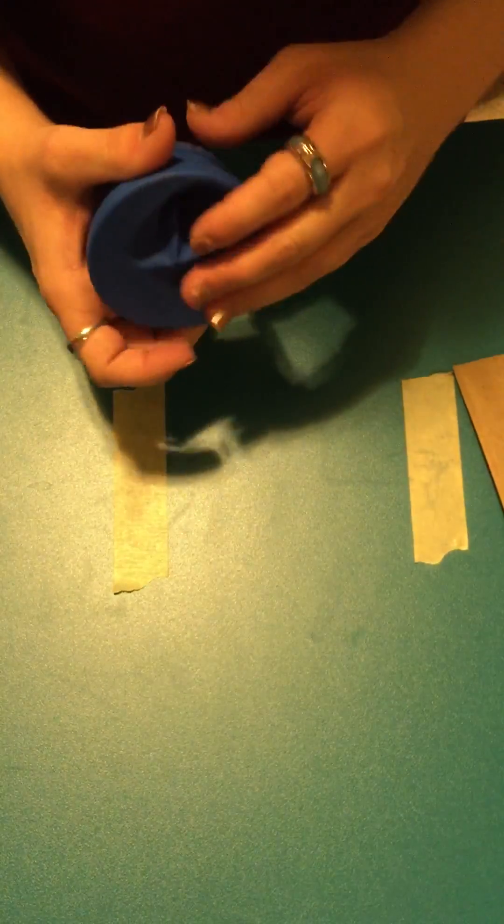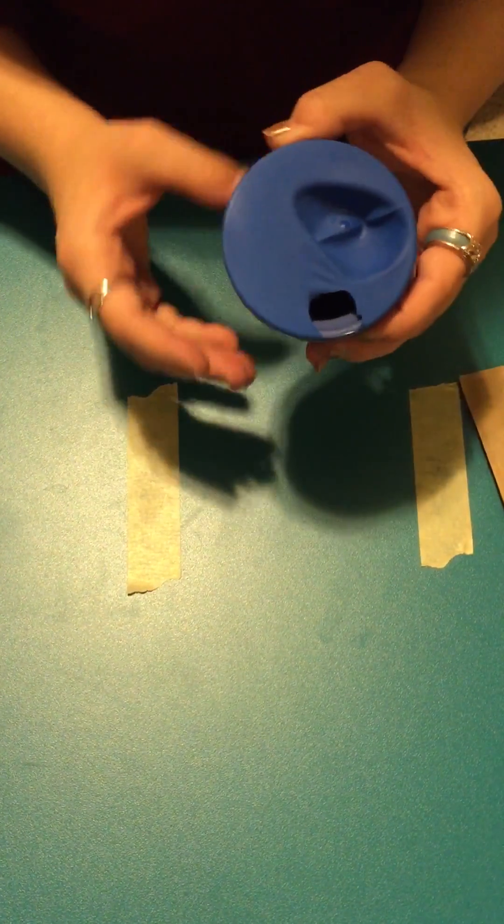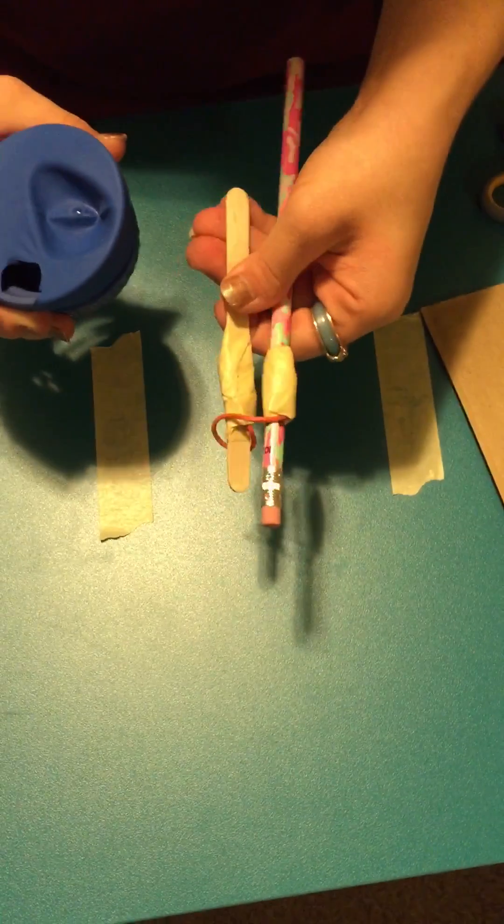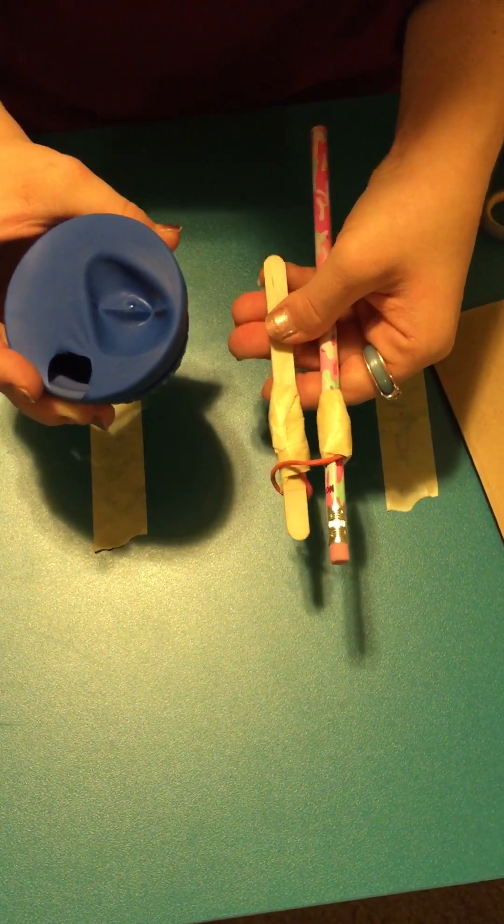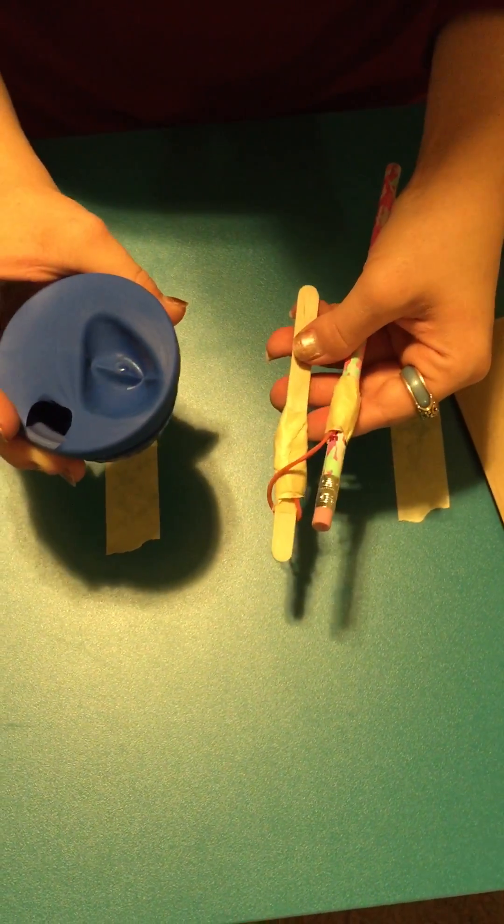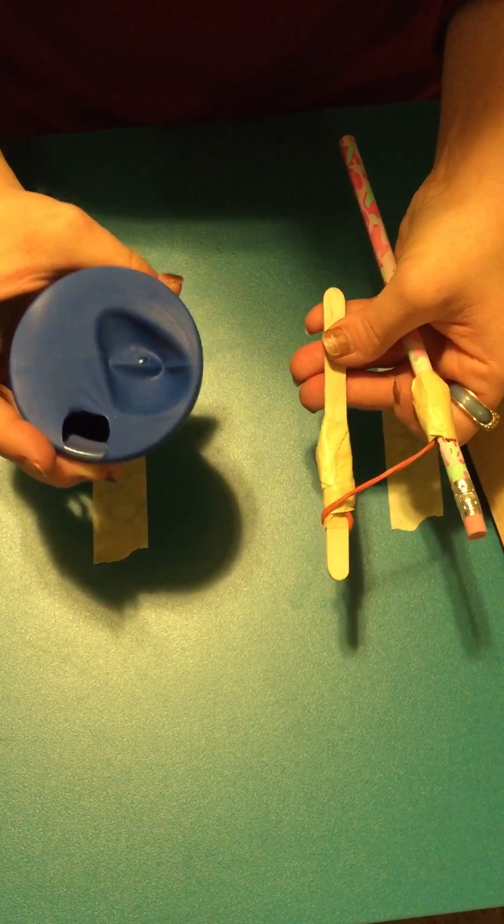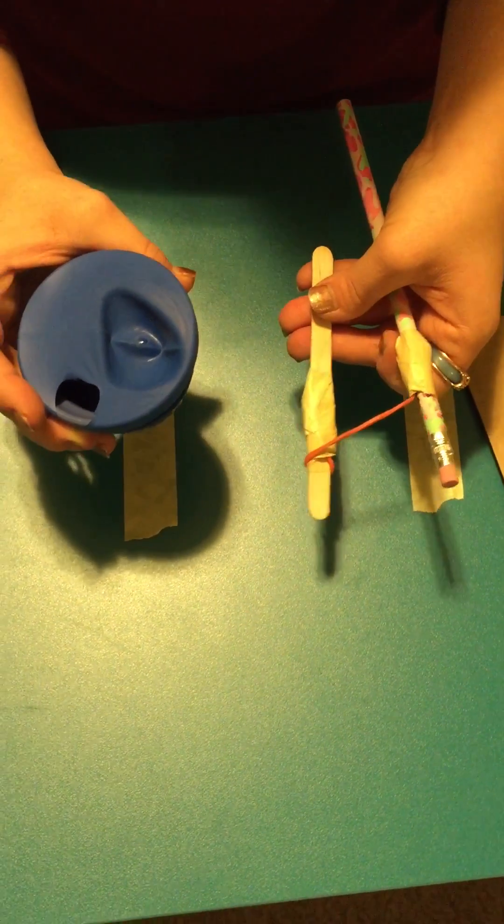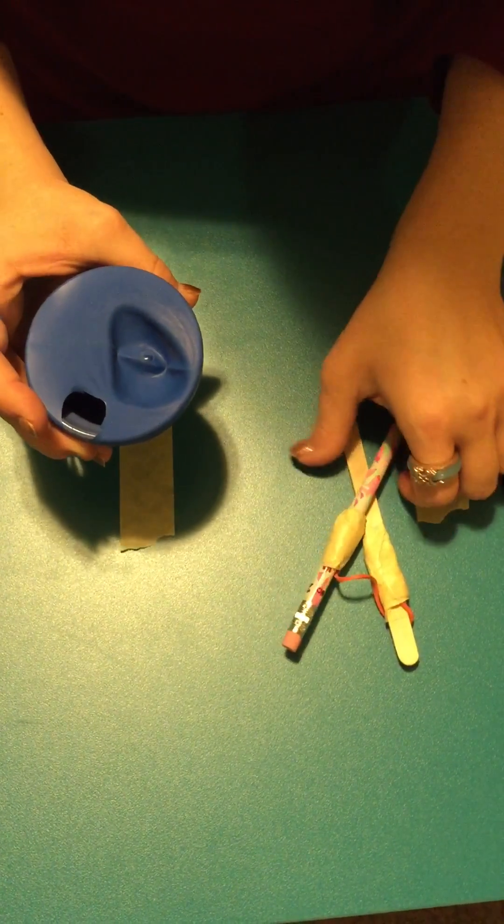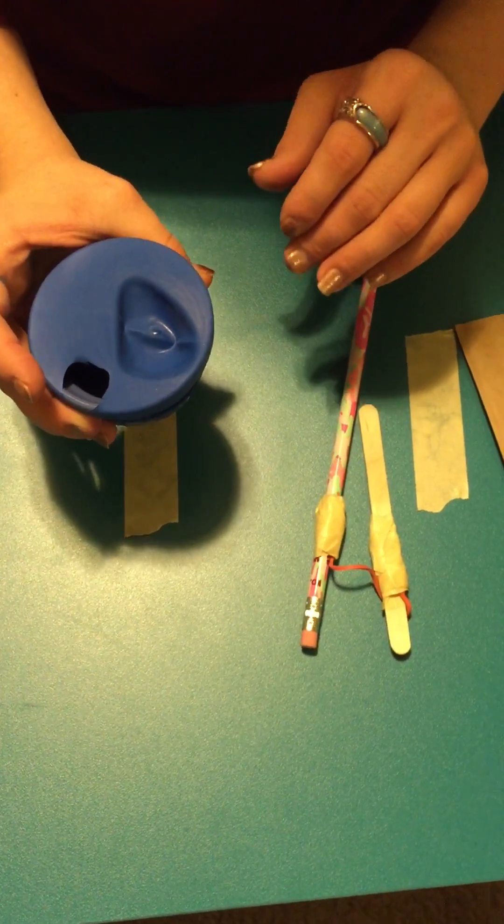You should have noticed that as the drum head got tighter or the tension increased, the pitch went higher. The same thing happened when we increased the tension of our rubber band. Therefore, we can conclude that pitch is changed by tension by increasing and decreasing the tension of a vibrating object. When you increase the tension, the pitch will get higher because the object will vibrate faster. But when we decrease the tension, it will vibrate slower, creating a lower pitch. This is how you know how pitch can be changed with tension.